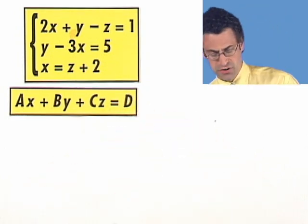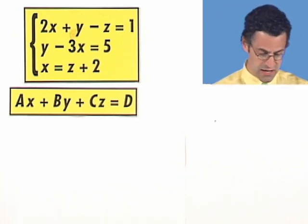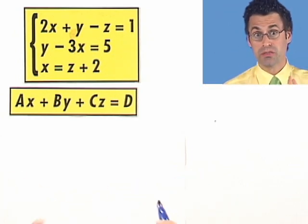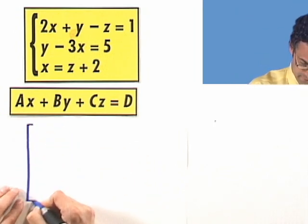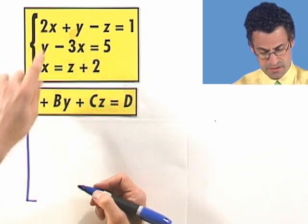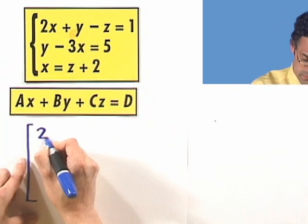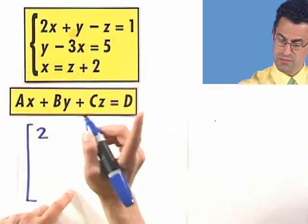So if you want to produce the augmented matrix for this system, what you would do is you would just rip off the coefficients and put it together. So here, I'm always going to put the x first. So this is going to be a 2. Just write the 2. Then the y, which is a 1. There's an invisible 1 there. You might think it's 0, but it's 1.